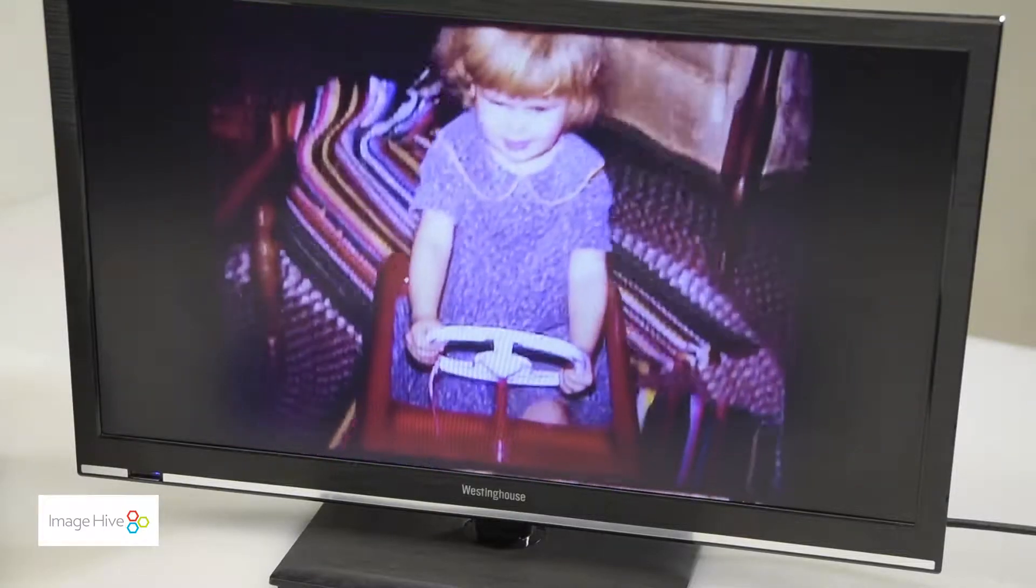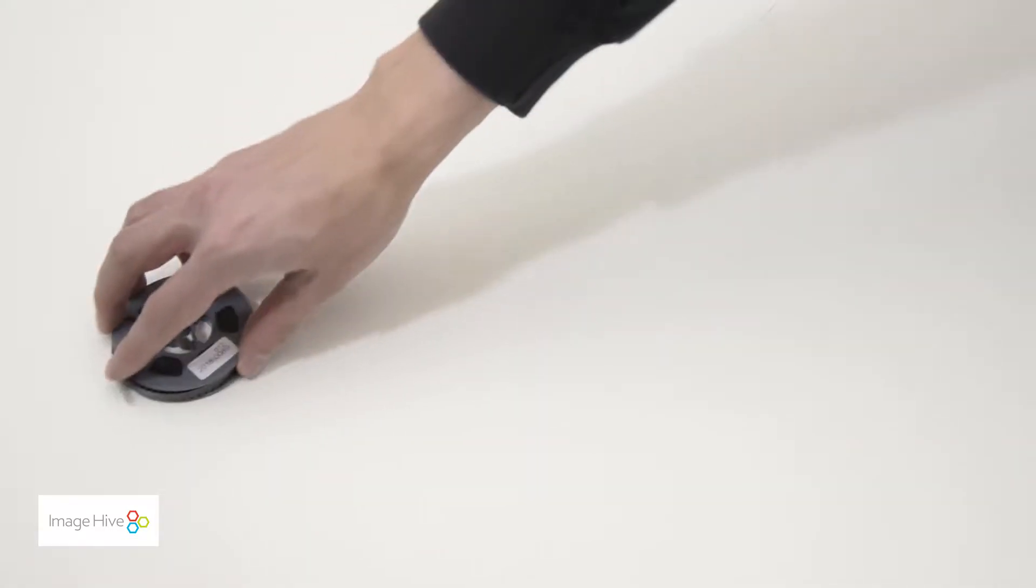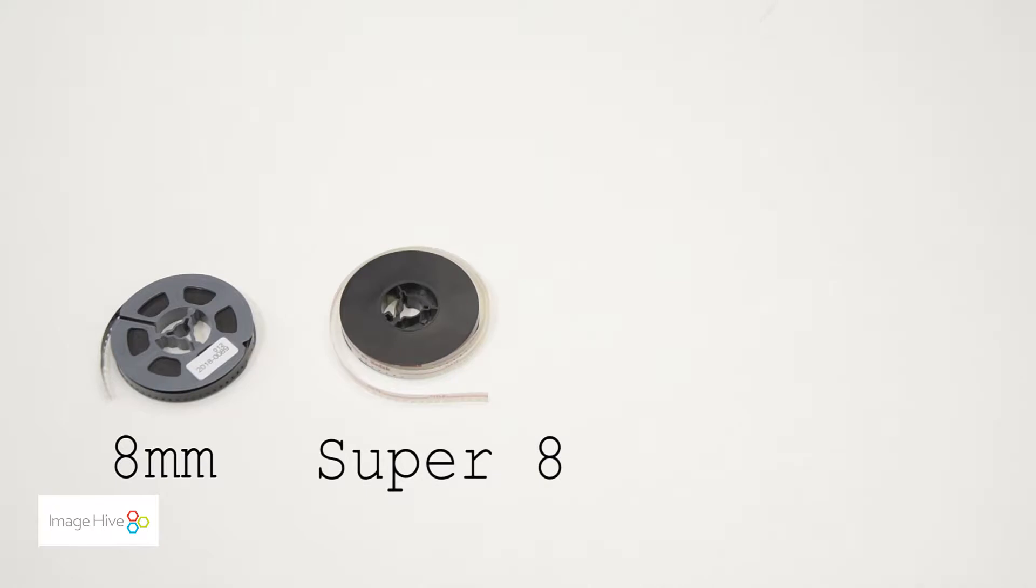Before we get started, let's take a look at the different types of film. The most common consumer formats were 8mm, Super 8, and 16mm film.